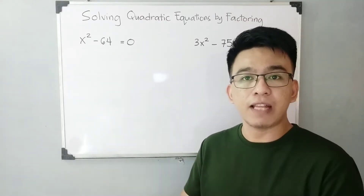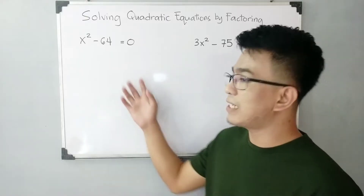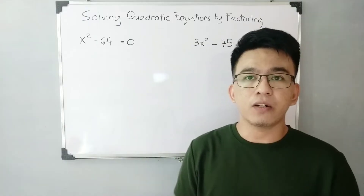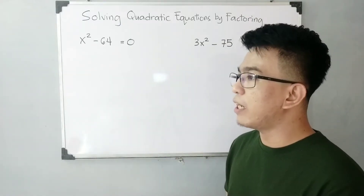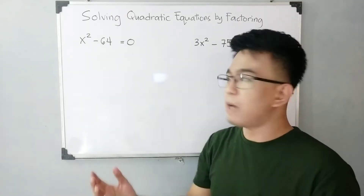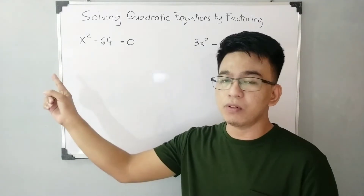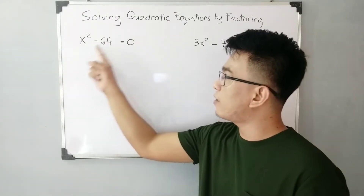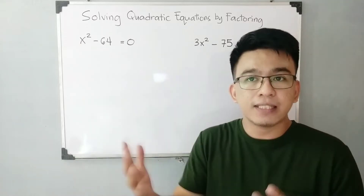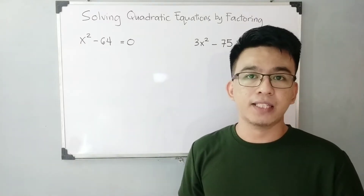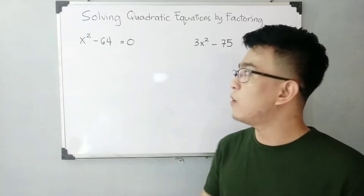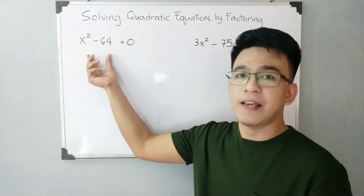Let's start with Example 1: x squared minus 64 is equal to zero. What we'll try to do here is find the value of the variable x. When we substitute it into the expression x squared minus 64, it will give us an answer of zero. So the question is: what is the value of x? By factoring, we can find the real value of x that makes this full expression equal to zero.